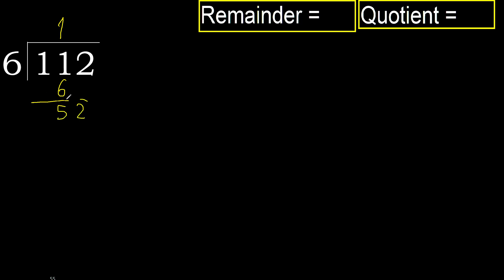Next. 52. 6 multiplied by 9, 54 is greater. Multiply by 8, 48 is not greater. Subtract. 52 minus 48 is 4.